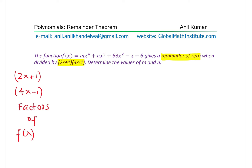When (2x + 1) is a factor, it means f(-1/2) = 0. And when (4x - 1) is a factor, it means f(1/4) = 0. So (2x + 1) is a factor provided that the value of the polynomial at x = -1/2 is 0, and (4x - 1) is a factor if the polynomial value is 0 for x = 1/4.